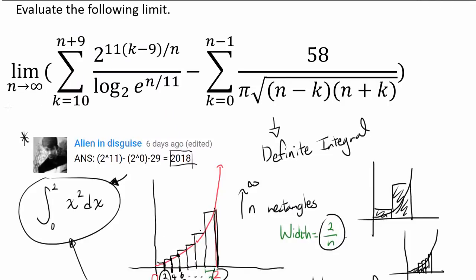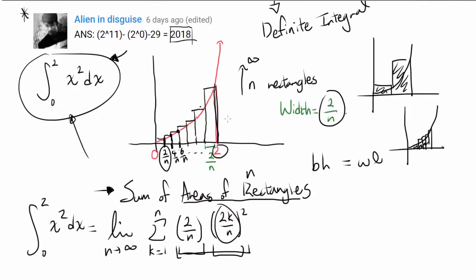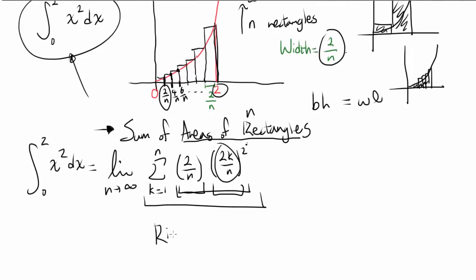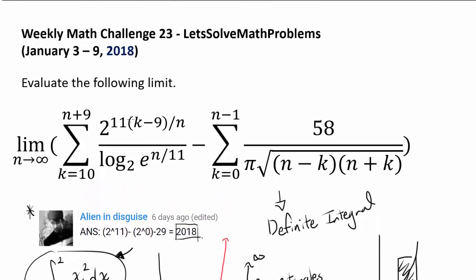We are going to write both summations and limits as the limiting value of a Riemann sum. This sum of rectangle areas written in that form is called the Riemann sum. Since a definite integral is usually easier to evaluate than a complicated limit, we'll go from limit to definite integral and evaluate the definite integral to find our answer.